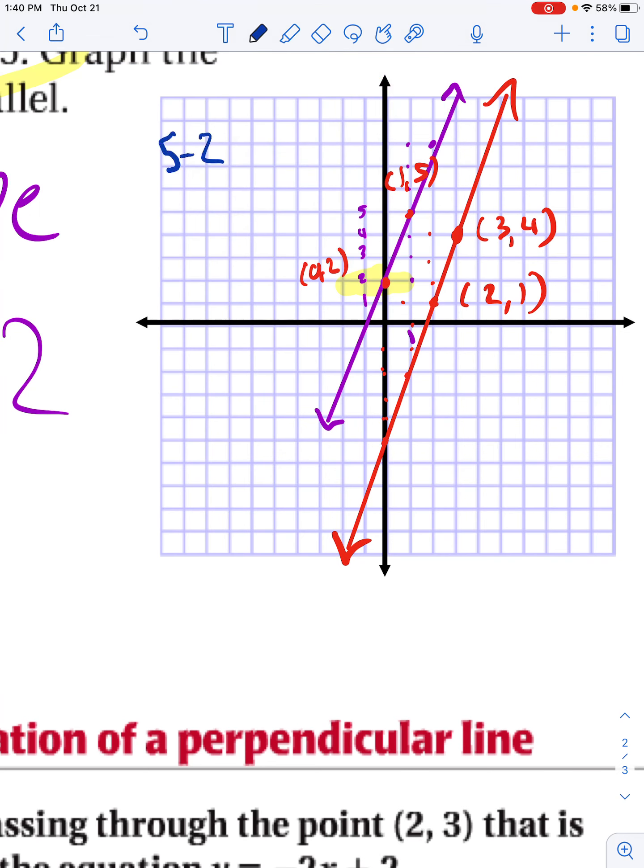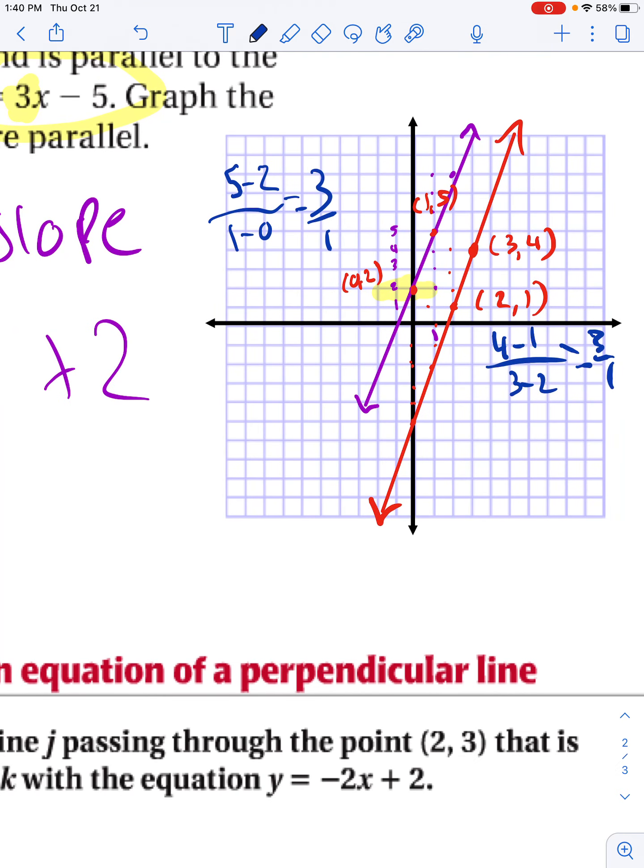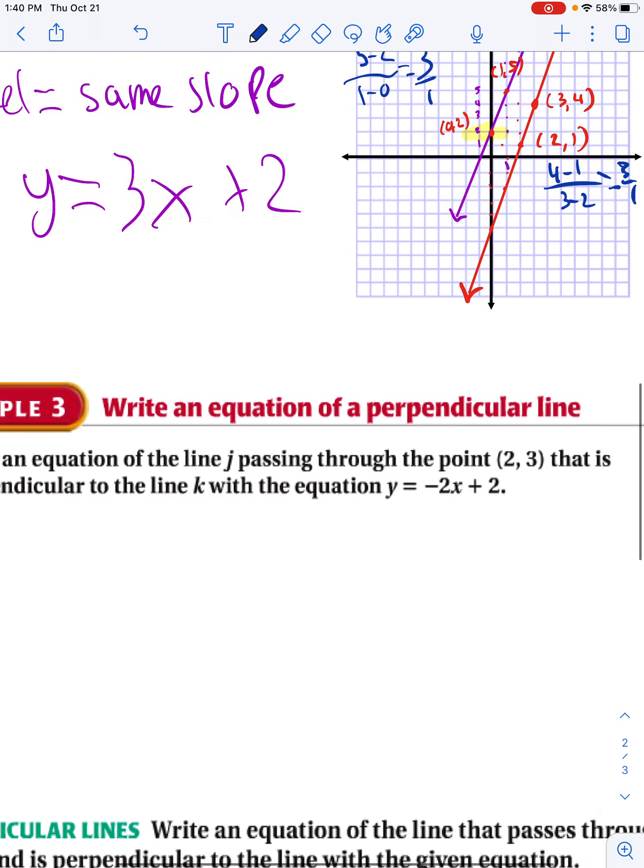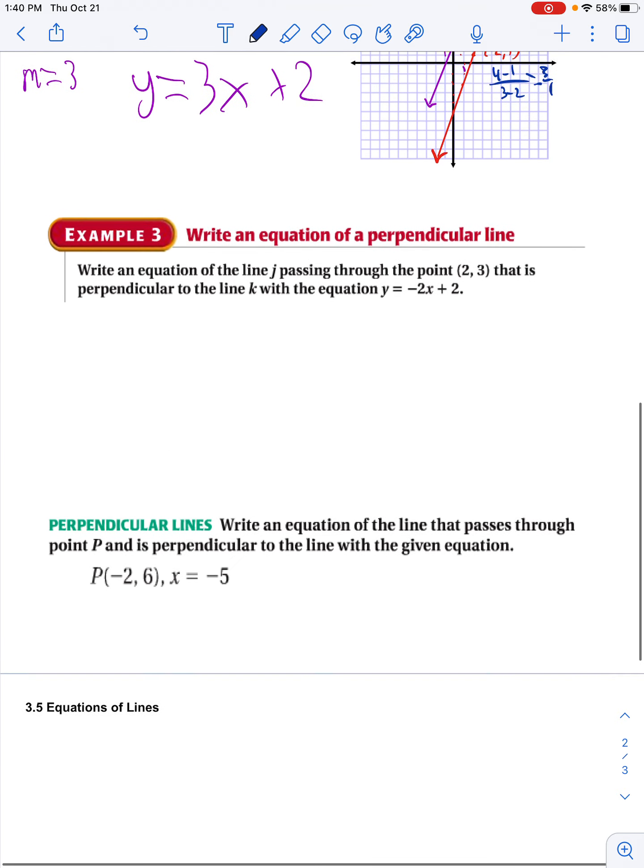So I'll do that real quick. So again, 5 minus 2 over 1 minus 0 gets me 3. 3, 4 minus 1 over 3 minus 2 gets me 3 over 1. So I graphed it. I picked some points. I checked my answer. And the slopes are the same.